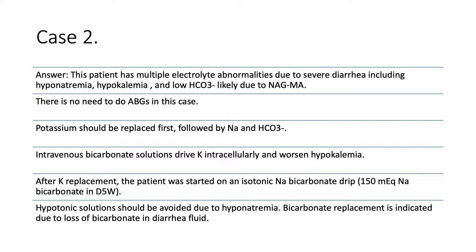Replace potassium first. You're not going to give bicarb because that would drive potassium into the cells and you'd get worsening hypokalemia, and the potassium is already very low. So you're going to replace potassium orally and intravenously. After that, you are going to start an isotonic sodium bicarbonate drip: 150 mEq per liter of sodium bicarbonate in D5W.